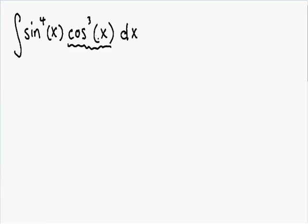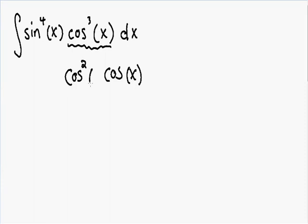Notice how this cosine has an odd exponent of 3. The idea is that you want to separate this — you want to take 1 away. So if we take 1 cosine away, and we had 3 to start with, there are 2 left over. So we have cosine squared of x multiplied by cosine of x, and that gives us our cosine cubed.